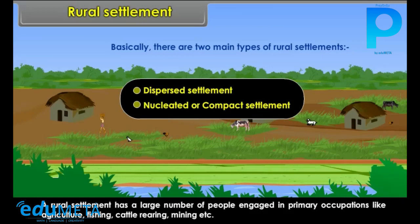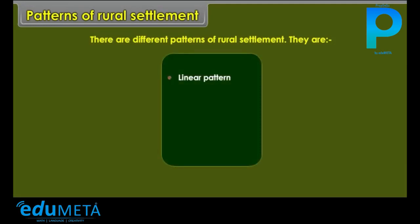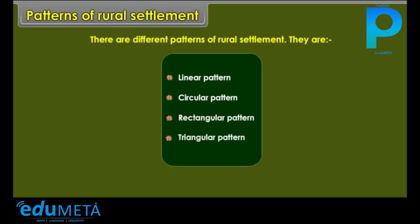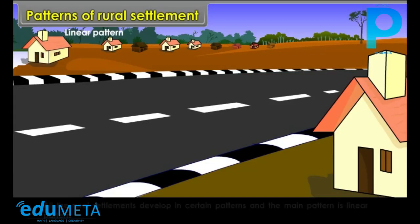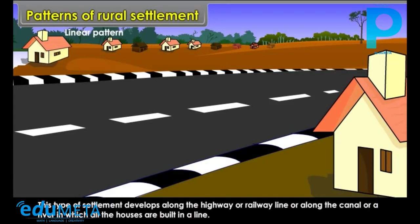Rural Settlement: There are different patterns of rural settlement — linear pattern, circular pattern, rectangular pattern, and triangular pattern. All the rural settlements develop in certain patterns, and the main pattern is the linear pattern. This type of settlement develops along the highway or railway line or along the canal or a river, in which all the houses are built in a line.